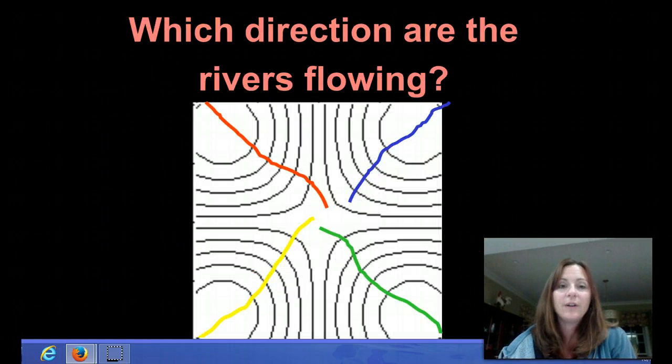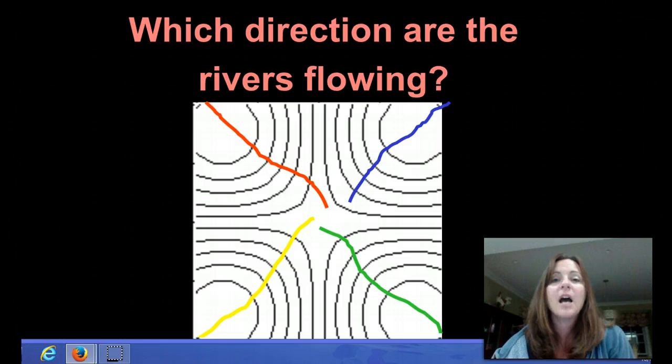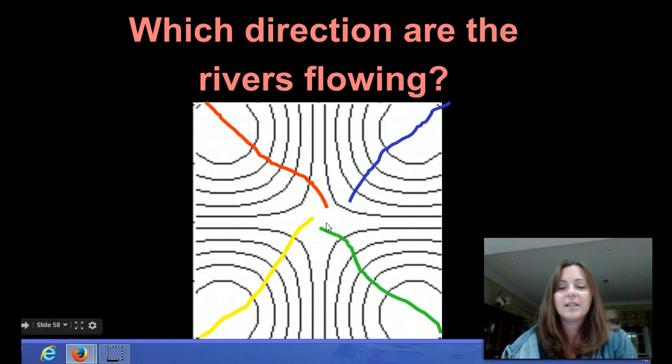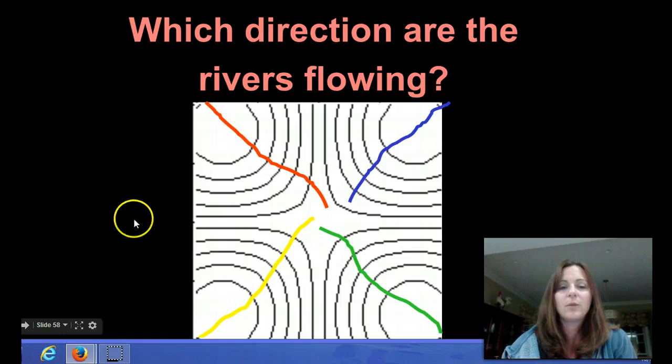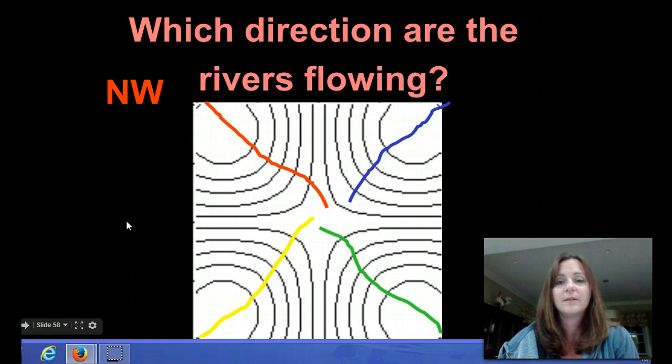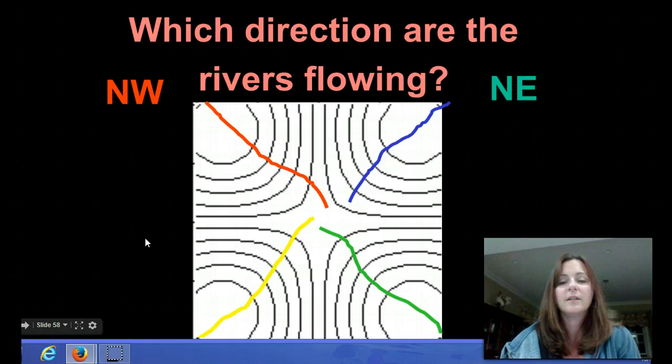So here are four different rivers. We need to determine which direction are these rivers flowing. And here we have no other indicator except for the way the contour lines are bending. Remember, they bend upstream. So the source of this river has got to be right here at the top of these hills, or at the base of these hills. It's a very confusing picture, right? But let's look at this red one. Which way is this river flowing? It's flowing northwest because the V's are bending southeast. How about the blue? Northeast. Because the V's are bending southwest. How about the green? The V's are bending northwest. So it's flowing southeast. And the yellow? Again, the V's are bending in the opposite direction. They're bending northeast. So it's flowing southwest.